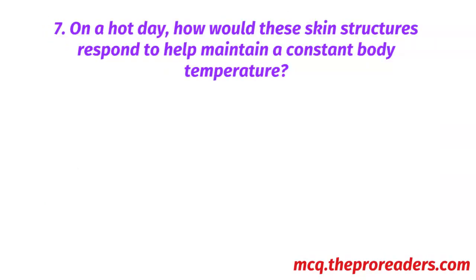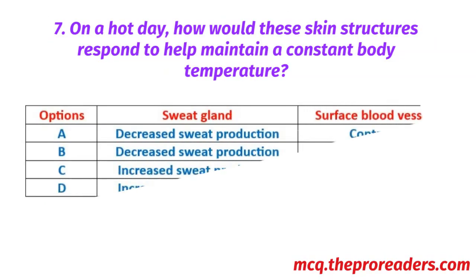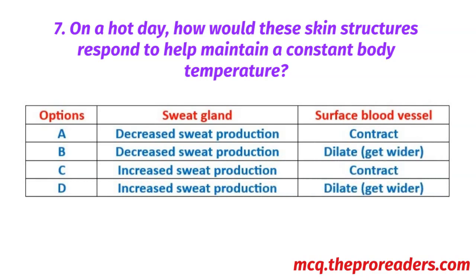On a hot day, how would these skin structures respond to help maintain a constant body temperature? Options — sweat gland, surface blood vessels. A. Decreased sweat production, contract. B. Decreased sweat production, dilate. C. Increased sweat production, contract. D. Increased sweat production, dilate. Option D — increased sweat production, dilate — is the correct answer.